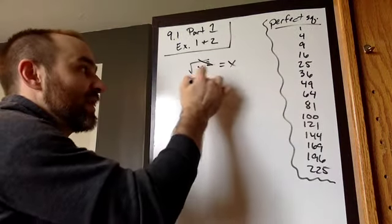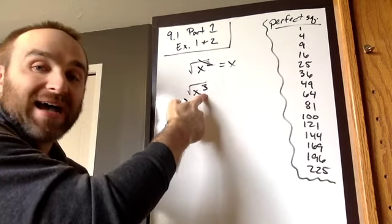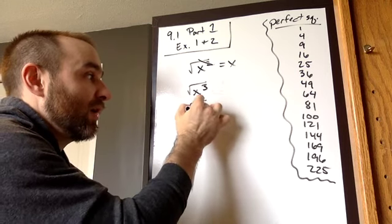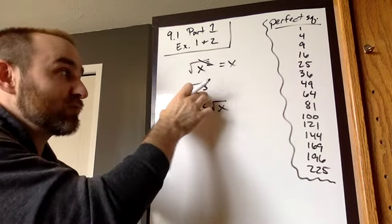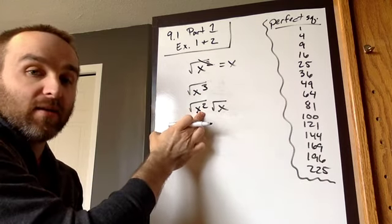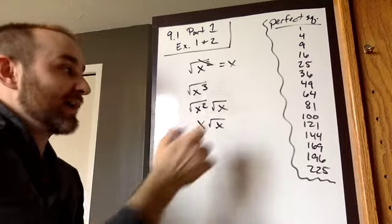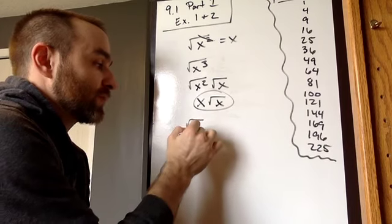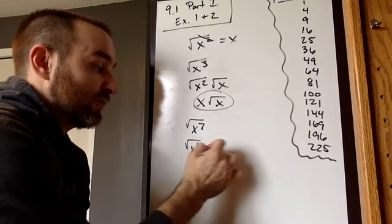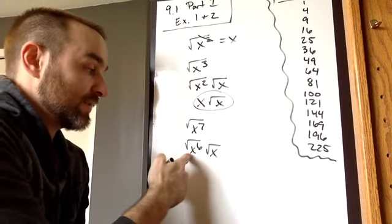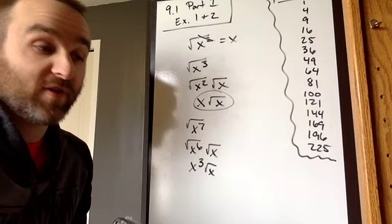If the exponent is odd, we've got to break it up. Let's say we have the square root of x to the third. We're going to break that into something with an even exponent. If it's odd, all we're going to do is take one away. So x to the third becomes x squared times x. Now I can take the square root of x squared, which is x, so x root x would be my answer. Let's look at the square root of x to the seventh. I can break that into x to the sixth — subtract one — which leaves me with another root x there. Take the square root of x to the sixth, that gives me x to the third root x.